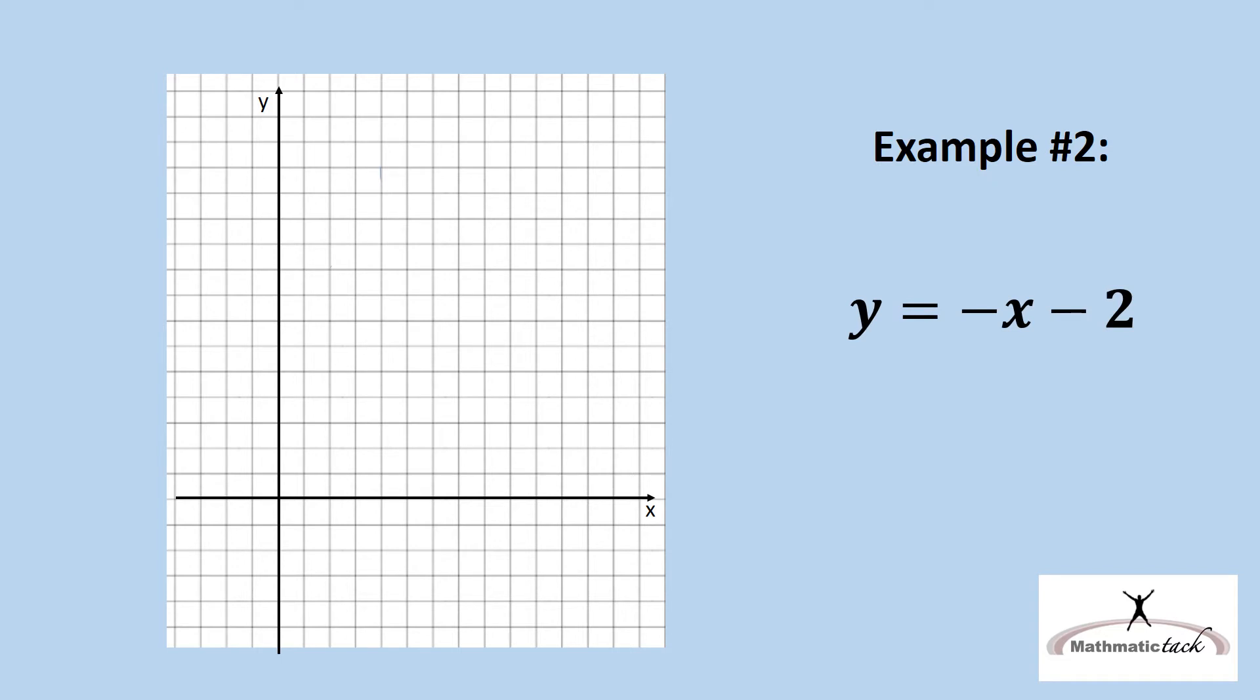Take for example, the line y equals negative x minus 2. The y-intercept is negative 2. But what is the slope? The negative x is the same as saying negative 1x. Therefore, the slope is minus 1.